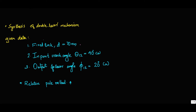Fixed link length 70mm, input crank angle theta 1 to 2 equal to 40 degrees clockwise, output follower angle 5,1 to 2 equal to 20 degrees clockwise. The other mechanism is the 4-bar mechanism. The output is D, consisting of crank, coupler, and follower.